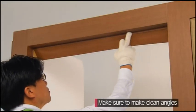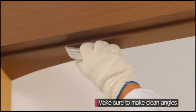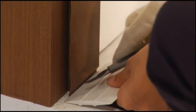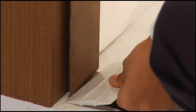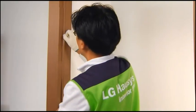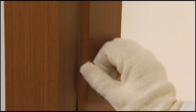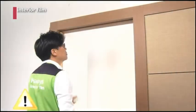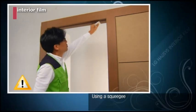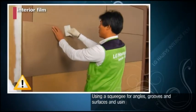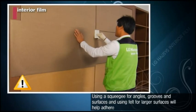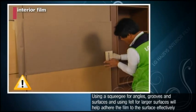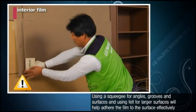Use the squeegee to make sure bent areas of the film have clean angles. Remove excess with a cutter and carefully finish off the corners to prevent any flaws. Using a squeegee for angles, grooves and surfaces, and using felt for larger surfaces will help adhere the film to the surface effectively.